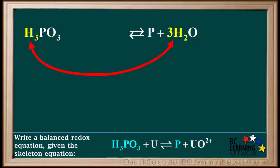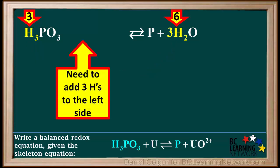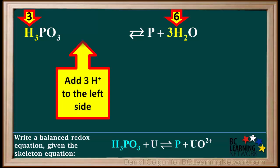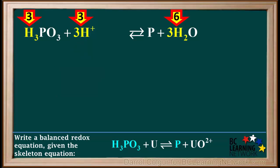Now we'll balance hydrogen. We have three H's on the left and six H's on the right, so we need to add three more H's to the left side. We accomplish this by adding three H+ ions to the left side. Now we have six H's on both sides of the equation, so hydrogen is balanced.